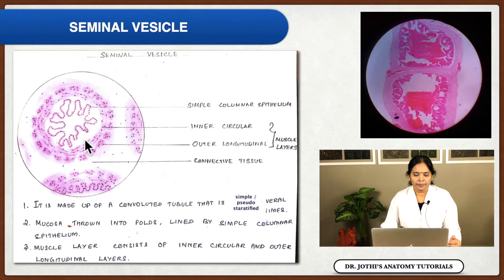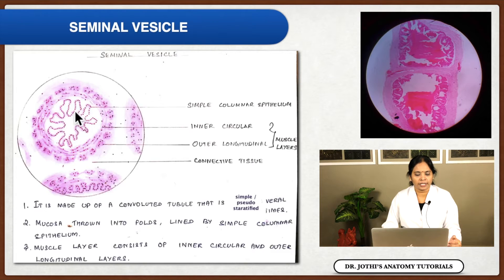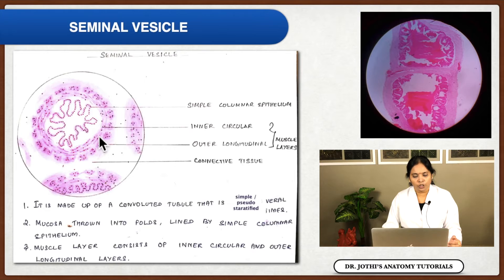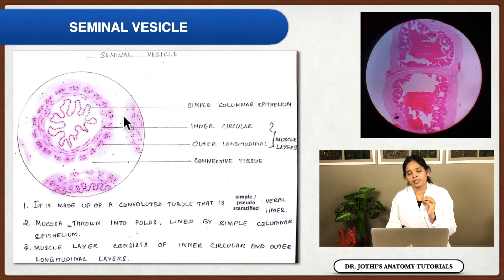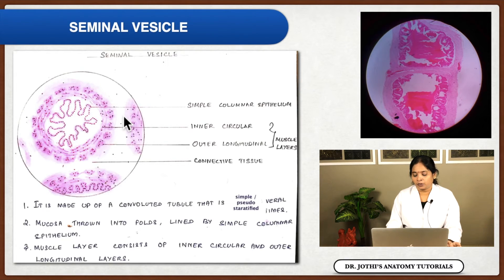From inner to outer, the seminal vesicle has a mucosa, a muscular layer, and an adventitia. The mucosa is thrown into folds and is lined by simple or pseudostratified columnar epithelium resting on the lamina propria. The muscular coat has only two layers: inner circular and outer longitudinal. Then there is an adventitial coat. The seminal vesicle is summarized as a simple sac-like accessory sexual gland.